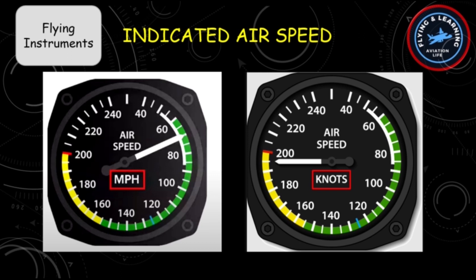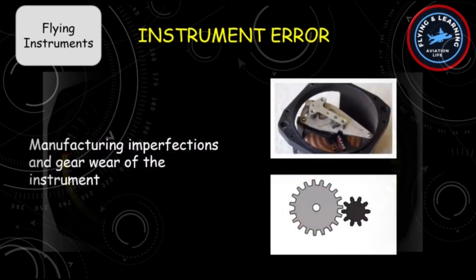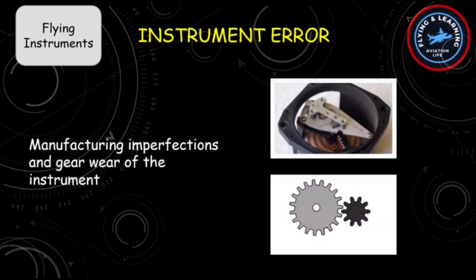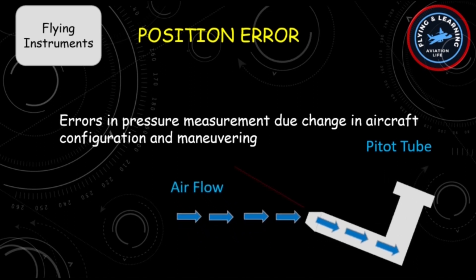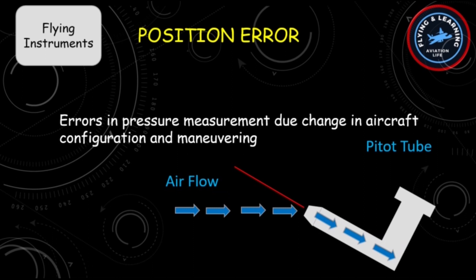Instrument error is due to small manufacturing imperfections and gear wear of the instrument. Position error is the error in measuring the pressure reading due to change in aircraft configuration, like use of flaps, speed brakes, aircraft maneuvering, or with change of angle of attack, as depicted on the screen.